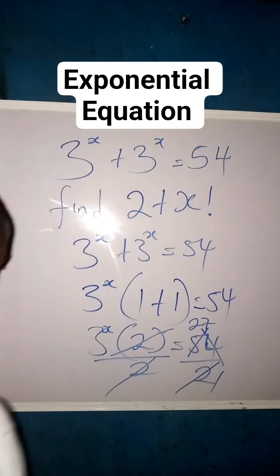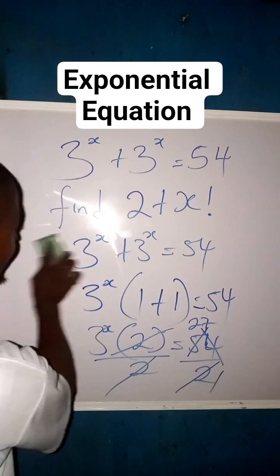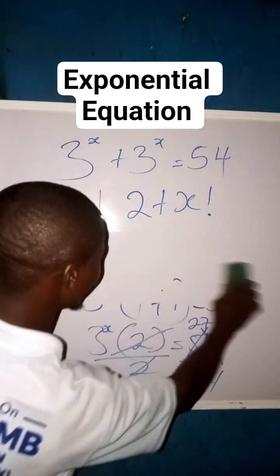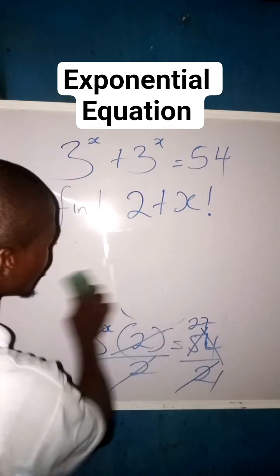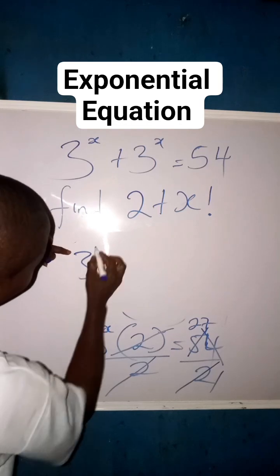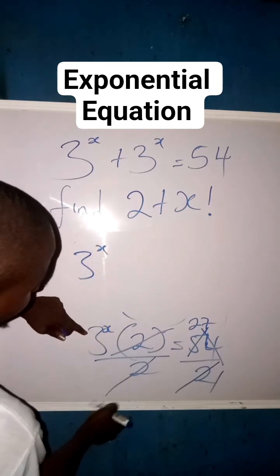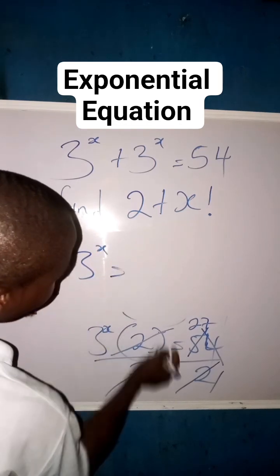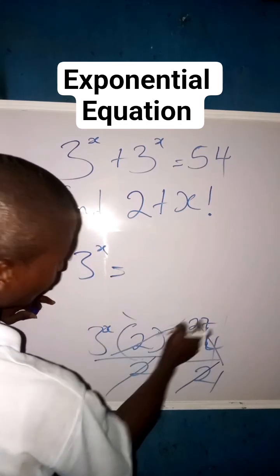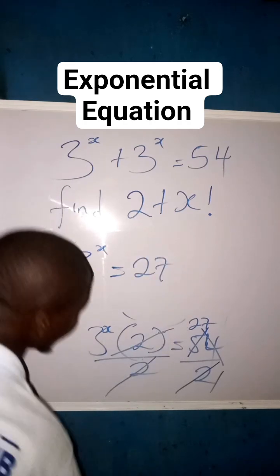So we are left with 3 to the power of x equals to 27.